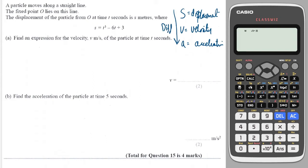It's asking me to find an expression for the velocity, so to find the velocity I will differentiate the displacement with respect to time. The derivative of this is 3t squared minus 6, and the constant differentiates to 0.